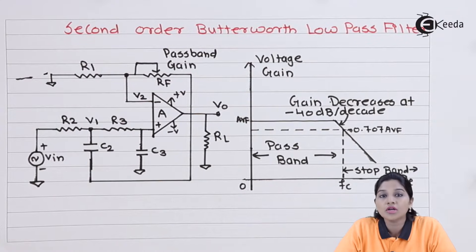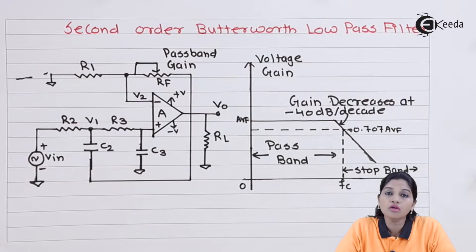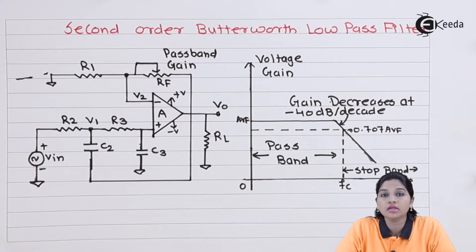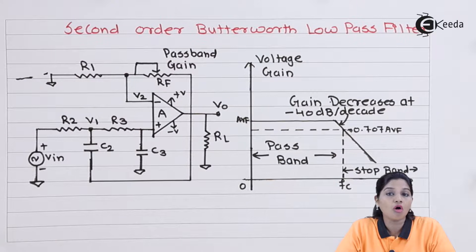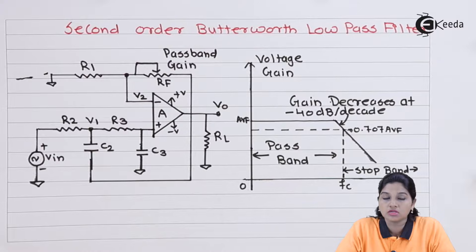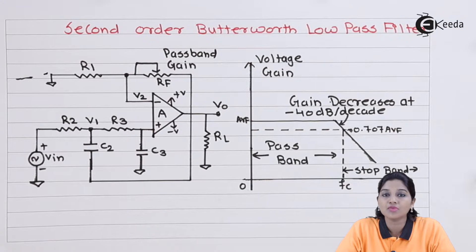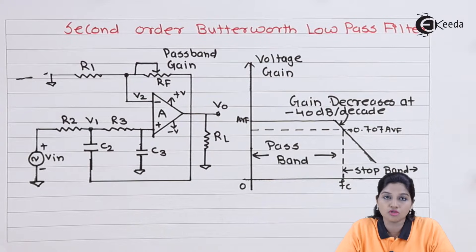The second order Butterworth low pass filter is nothing but a two-pole low pass filter. As the name indicates, the low pass filter will pass only the lower band of frequencies and blocks all frequencies above the cutoff frequency. A frequency called the cutoff frequency is defined to differentiate between the pass band and stop band.